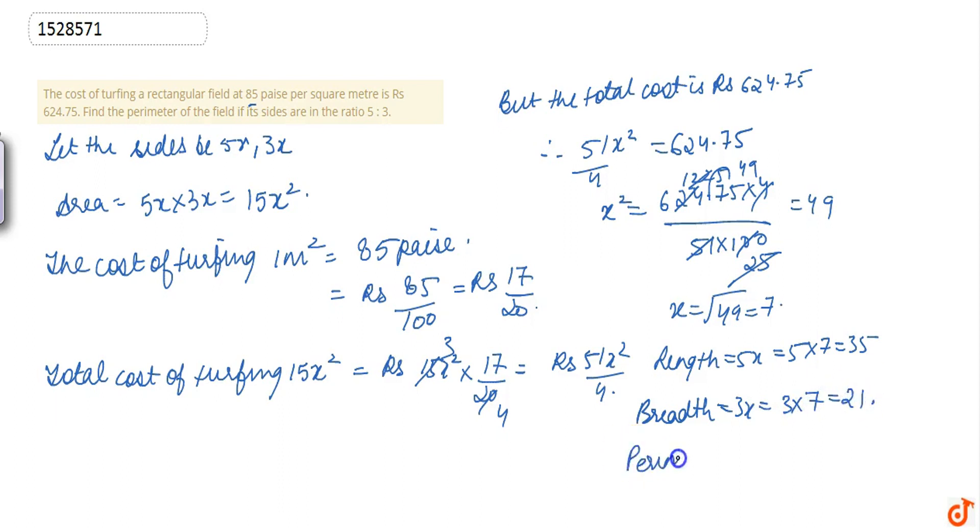The perimeter formula we know is twice of length plus breadth. That is, twice of 35 plus 21, which is twice of 56, which is 112 meter. And this is the required answer.